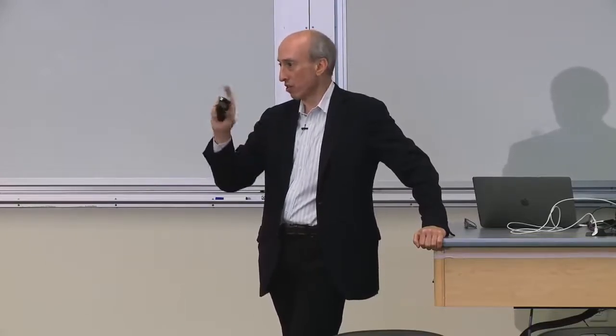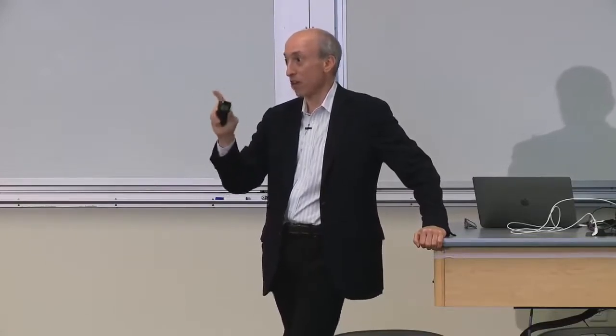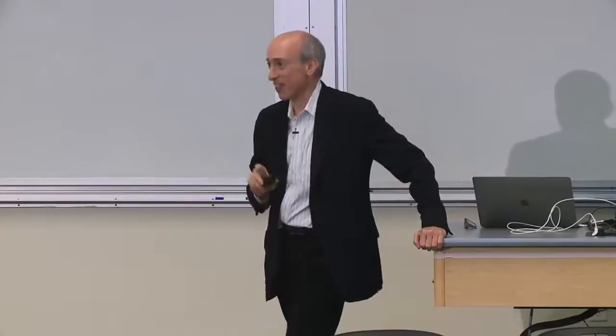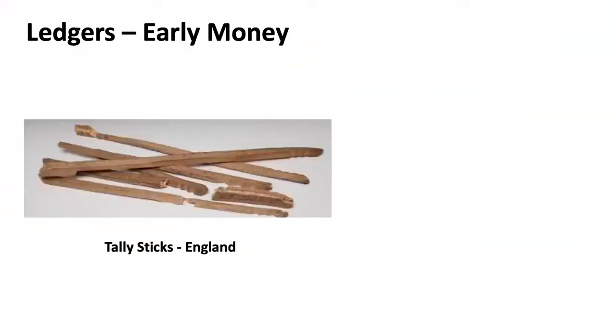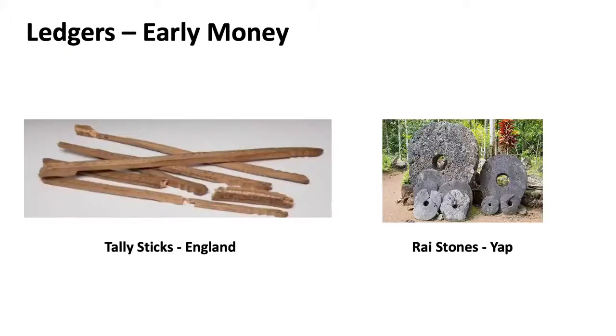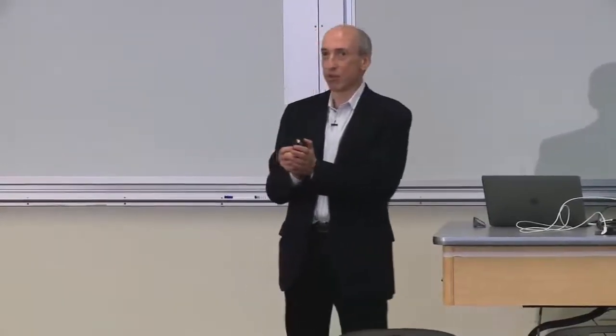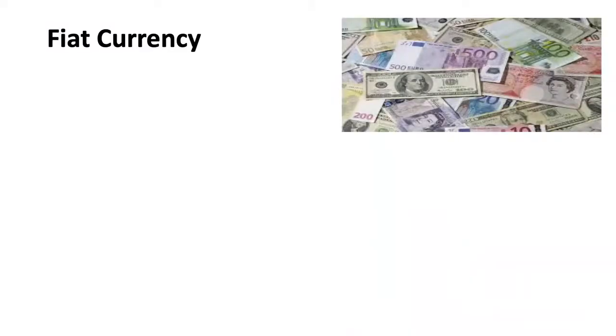Some early forms of money that were ledger-based: the tally sticks in England and the Yap stones. These were ledger types and forms of money. Ledgers didn't just come with electricity and computers. Now let's get back to fiat currency — the heart of the earlier question.